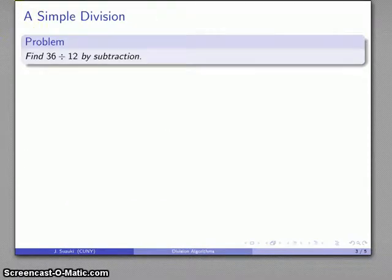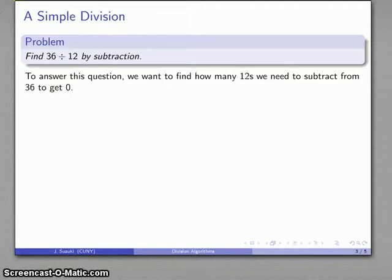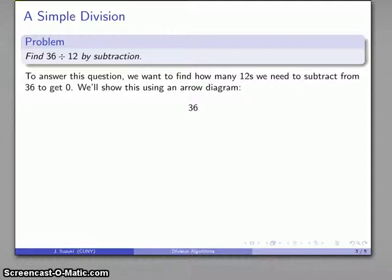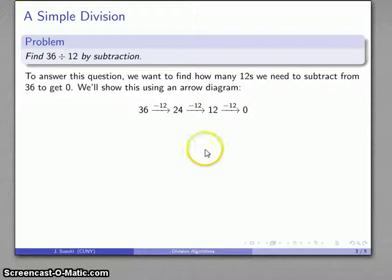Let's consider a very simple division problem: find 36 divided by 12. So my question is going to be rephrased: how many 12's do I need to subtract before I can get to zero? So well, let's just do it. I'll start with 36, subtract 12, subtract 12, subtract 12, and I'm at zero. And I've had to subtract 1, 2, 3 twelves. So 36 divided by 12 equals 3.